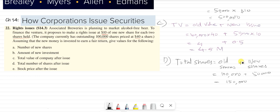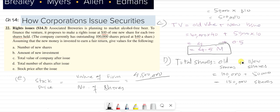Then we have part E: Stock price after the issue. So stock price is equal to value of firm divided by number of shares. From part C we know that the value of the firm is equal to $4.5 million, and the total number of shares from part D is 150,000. So the share price is $30.